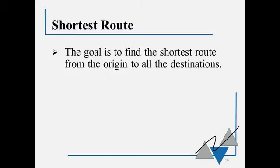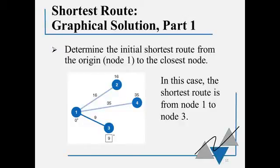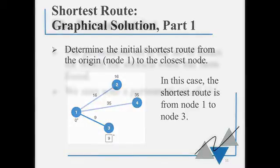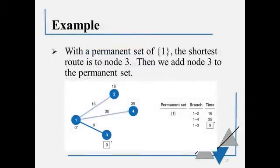We're going to use this example from the book. We are moving things from Los Angeles to all of these different cities. The first step in the solution is to determine the shortest route from the origin to any other point that connects to the origin. So we want the closest node, the shortest route. So in this case, the shortest route is from 1 to 3, because 9 is the smallest number that we have. To solve a shortest route problem, we're going to collect something called the permanent set. The permanent set is the set of nodes for which the shortest route has already been found. So we start with a permanent set of 1. So for example, with that permanent set of 1, the shortest route is to node 3, and then we're going to add node 3 to the permanent set.